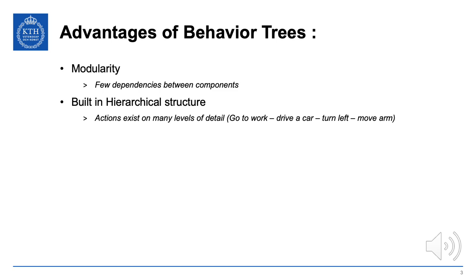Behavior trees also have a built-in hierarchical structure. Actions exist on many levels of detail. For instance, you might say 'I'm going to work,' and that high-level action probably includes driving a car or taking a train. Driving a car in turn probably includes at some point turning left, turning right, and so on.